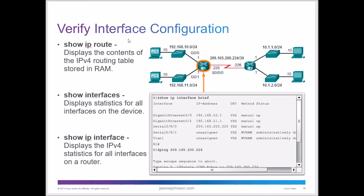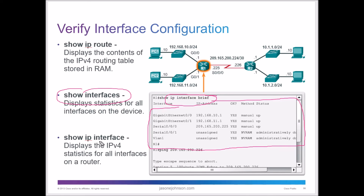You can verify your interface configuration using 'show ip route', 'show interfaces' to list all interfaces, and 'show interfaces brief' to see a summary. The 'show ip interface' command displays IPv4 interface statistics. You can also use 'ping' to test connectivity and check whether interfaces are up.